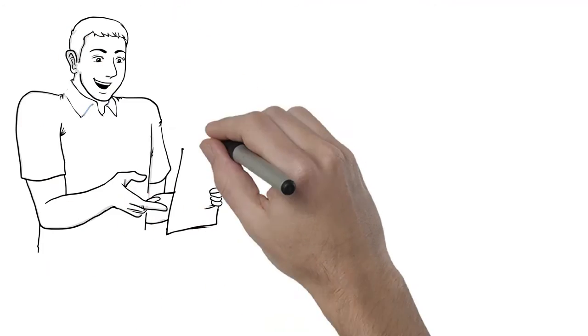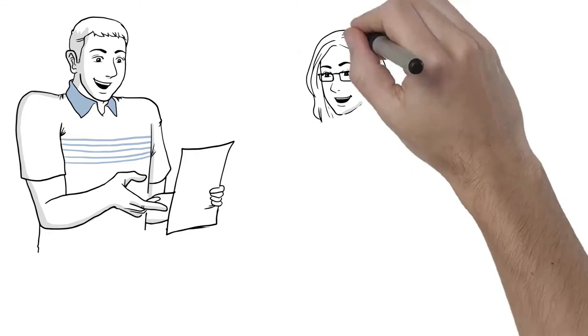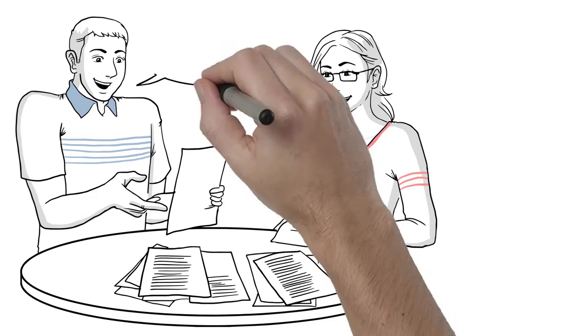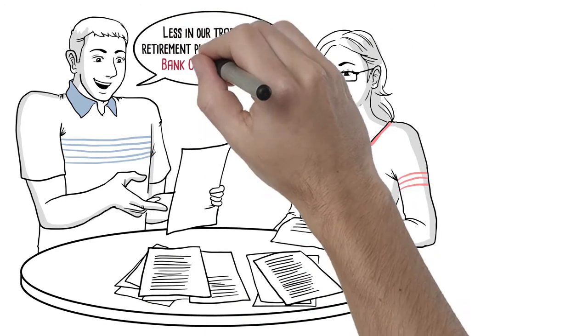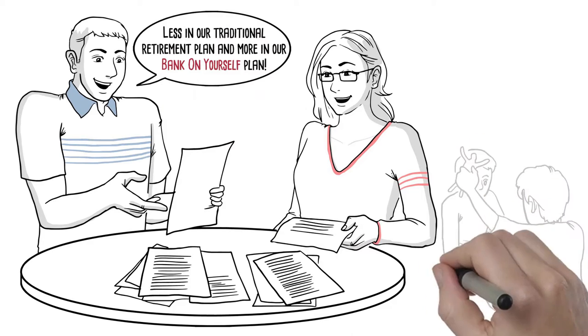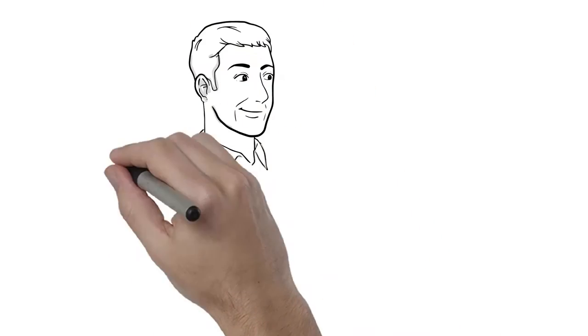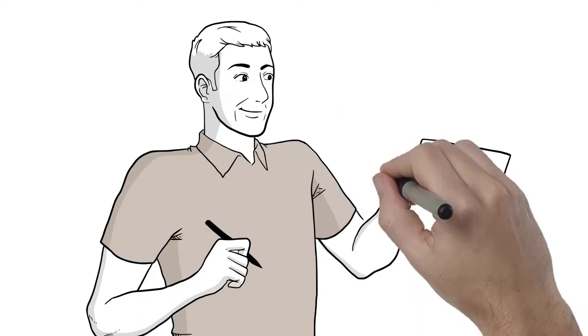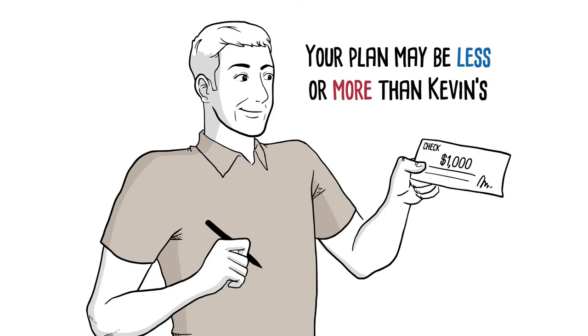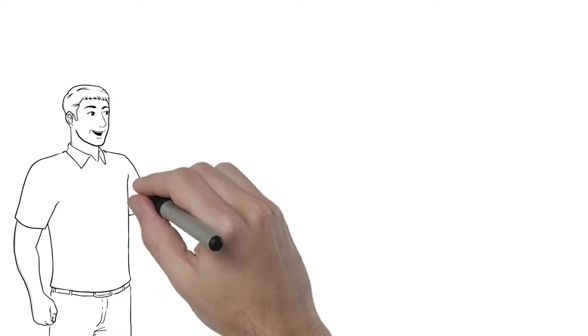Kevin started his first Bank on Yourself policy about 10 years ago when he had just turned 40. Because his policy will be providing his family with a guaranteed retirement income, he was comfortable in scaling back the funding of his traditional government-controlled retirement plan and funneling that money into his Bank on Yourself plan. He pays a premium of $1,000 per month, which he plans to do until he retires at age 67.